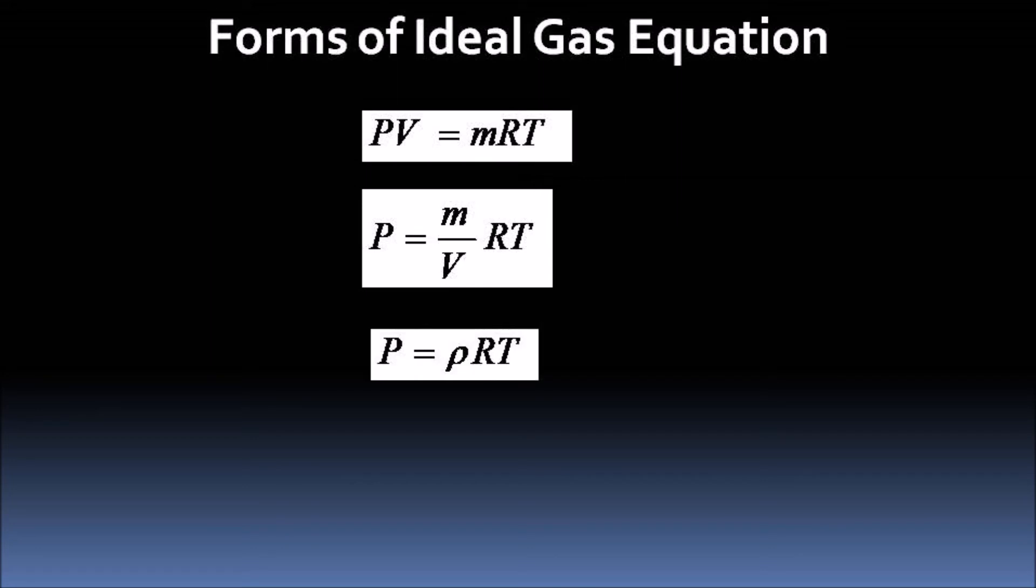Where ρ is the density of gas and R is the specific gas constant. It is to be noted that this is not the universal gas constant, but the specific gas constant for the gas under consideration.